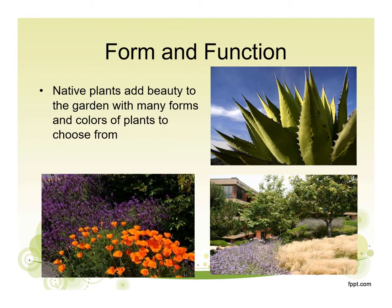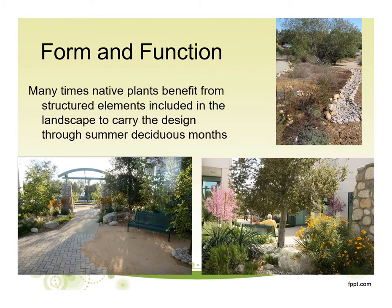Native plants can add beauty to the garden with many forms and colors. Native plant landscapes often benefit from including structured landscape elements as part of the design. This can help carry the design when plants go drought deciduous in summer months — when natives adapted to losing their leaves become dry crispy sticks to survive with no rain. It's not really different from very cold climates where plants go winter deciduous. But it can make for a pretty barren looking landscape if we don't think about structural elements to keep it attractive in the down season.